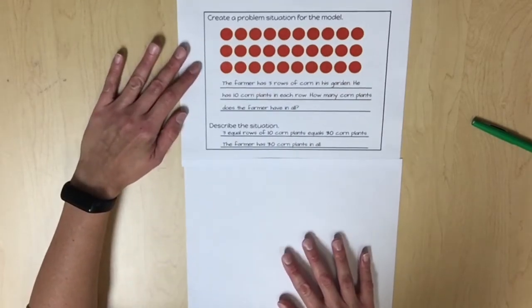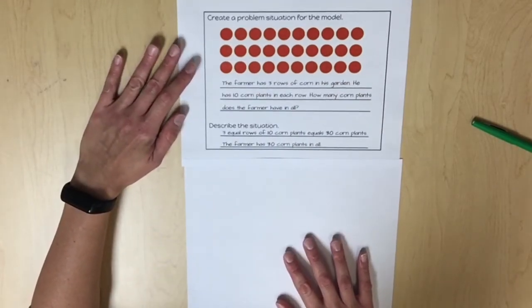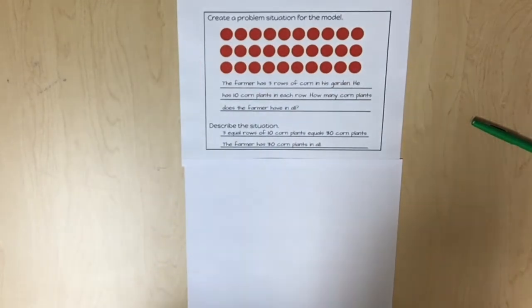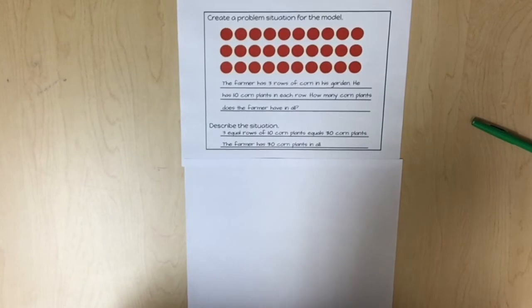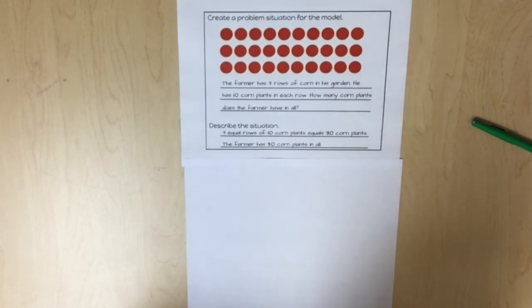Three equal rows of 10 corn plants equals 30 corn plants. The farmer has 30 corn plants in all.